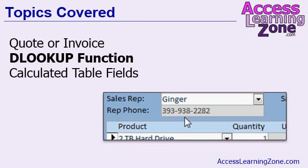Next, we'll learn about one of the more powerful functions in Access called DLookup. This function allows you to look up a value from a table or query. For example, in the image here, you can see I can select a sales rep for an order, and the DLookup function will automatically display that sales rep's phone number.